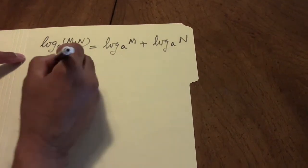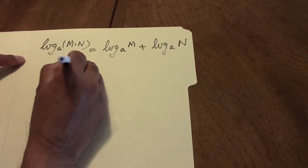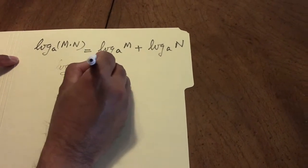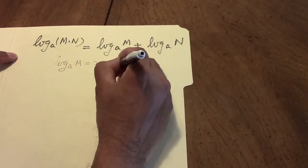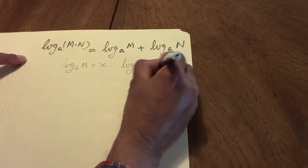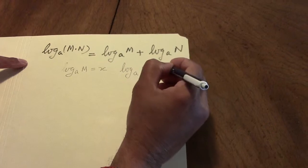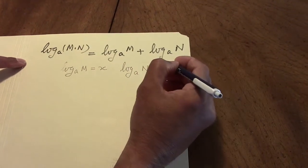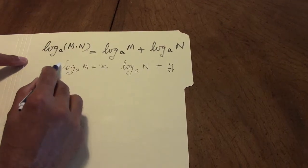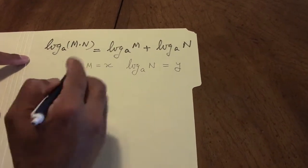To prove this, let's say that log to the base a of m is x and let log to the base a of n is y. Then by definition, if the log to the base a of m is x, then a to the power of x is m.